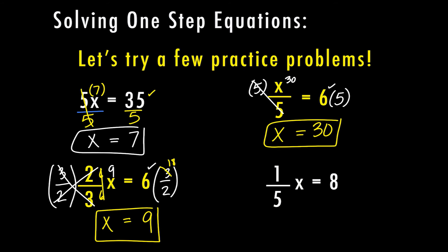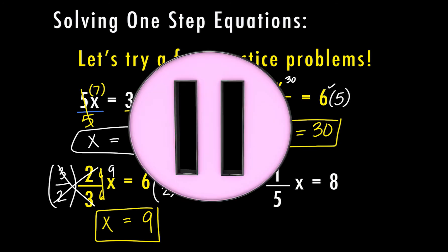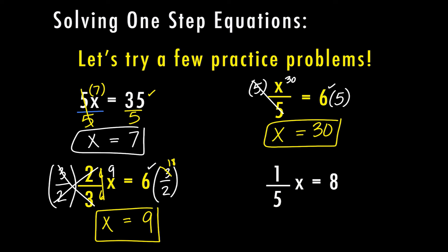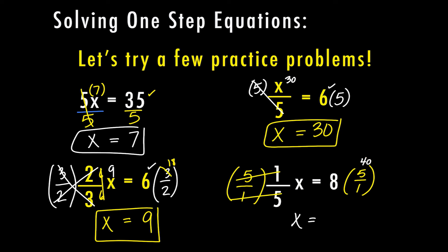For example 4, use the same process from example 3 — multiply by the reciprocal. Go ahead and pause the video and try this one on your own first. The reciprocal is 5 over 1. This cancels because 5 times 1 and 1 times 5 are both 5, so 5 over 5 equals 1, and 1 times x equals x. On the right side, 8 times 5 is 40, and 40 divided by 1 equals 40. So x equals 40.